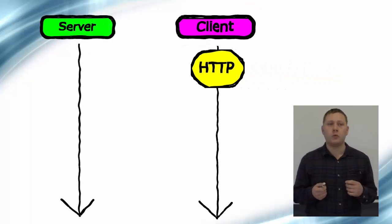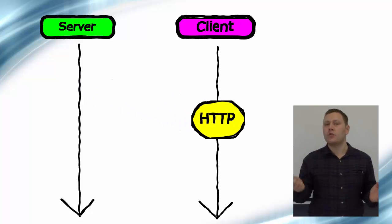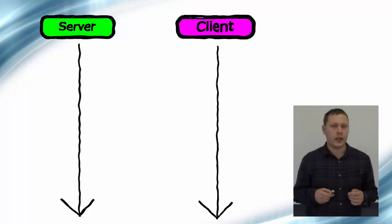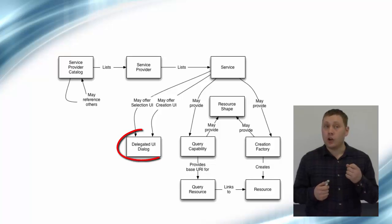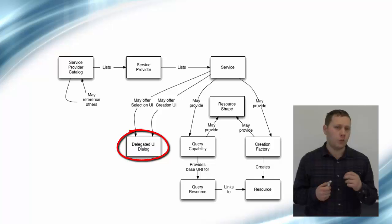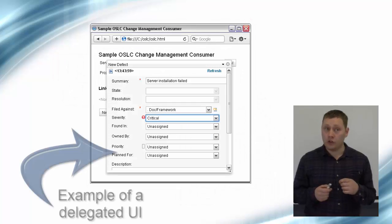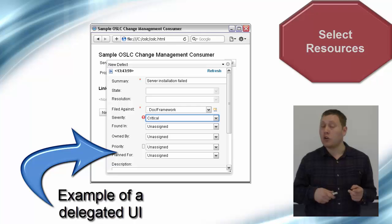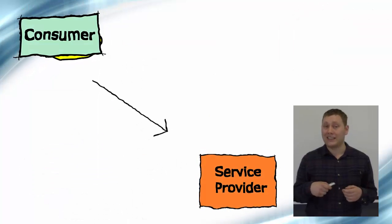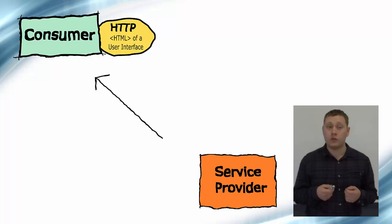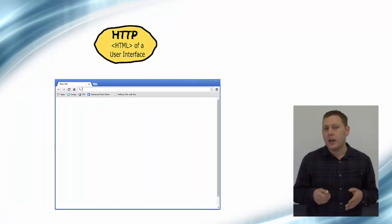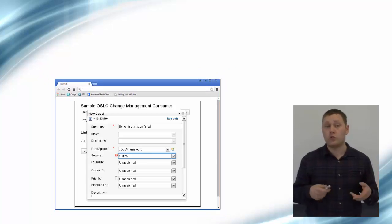So far, to access the features I have described you would have to do so programmatically. The operations talked about would typically be done by software applications sending and receiving HTTP commands, and no end user would ever work like that unless they are perhaps a software developer who is debugging. With the delegated UI, it is possible for an OSLC service provider to give consumers the ability to perform some actions without ever having to write a line of code. The delegated UI works by providing an interface to the consumer which allows the end user to select or create new resources. For example, when you perform a GET on a delegated UI for selection, you get back the HTML code of a form that allows you to browse resources. This code can then simply be loaded into a web browser and the end user will be provided with a form which they can use to browse their resources.